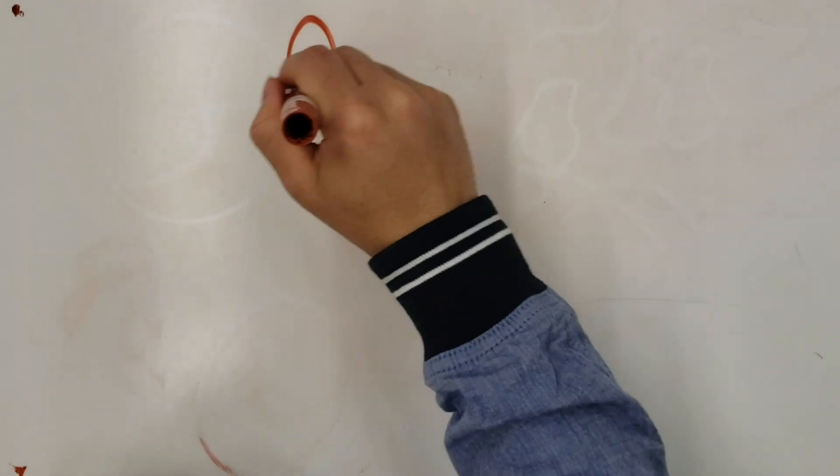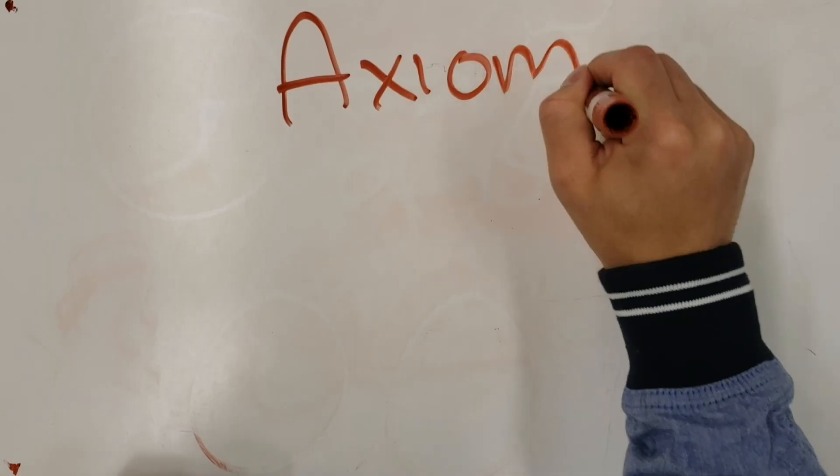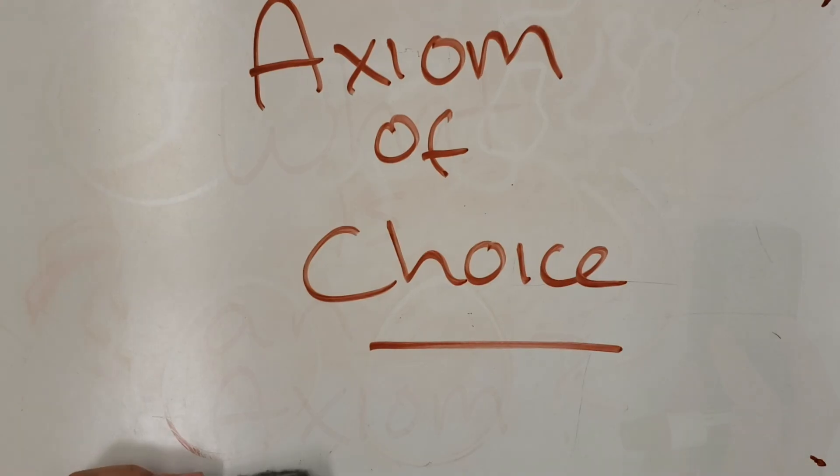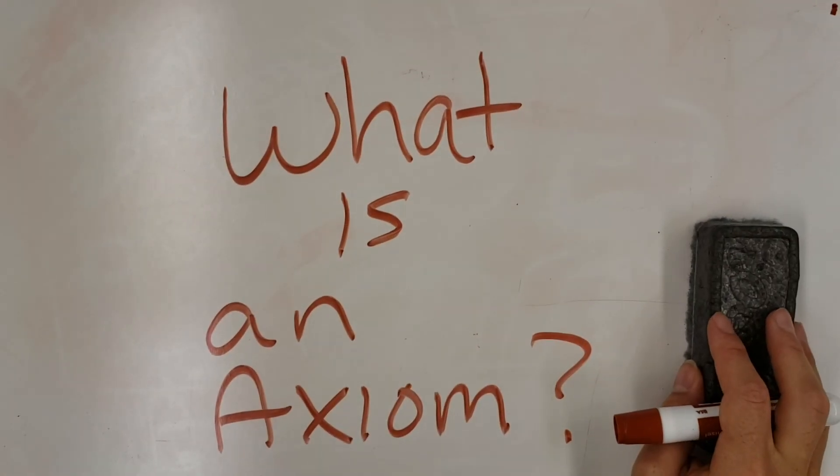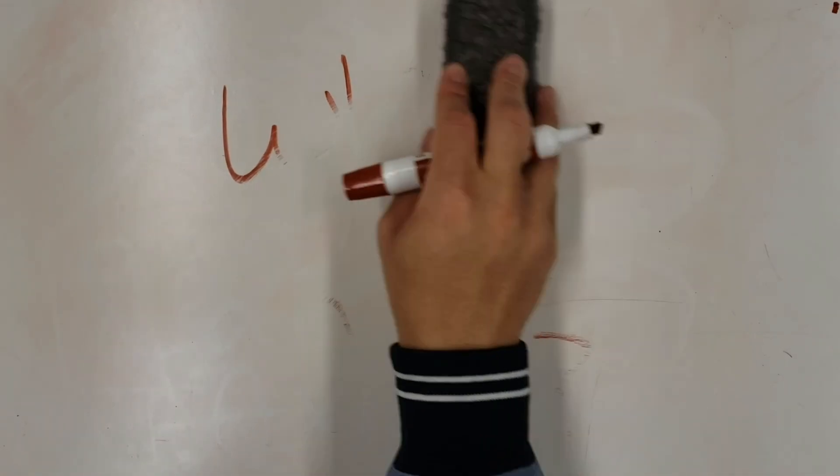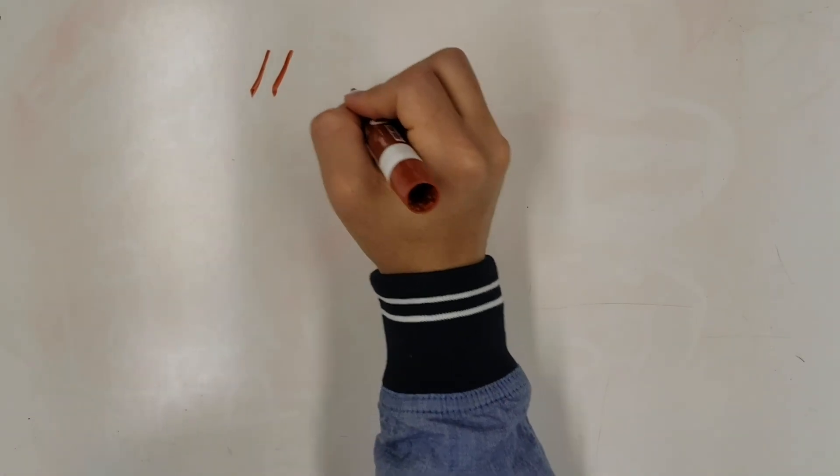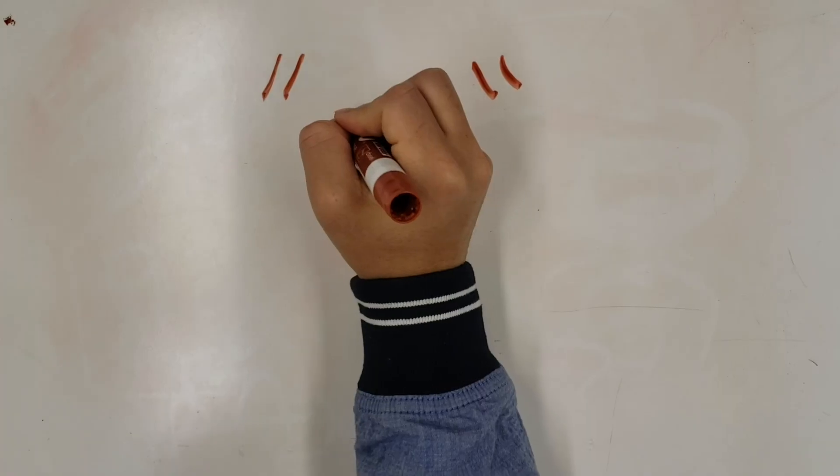In this video we'll explain this axiom and its bizarre consequences. Maybe asking what is an axiom? In mathematics, an axiom is a proposition regarded as self-evidently true without proof.